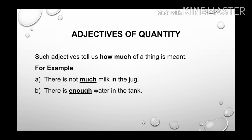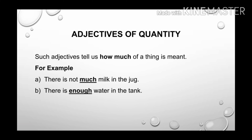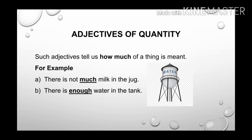Our next kind of adjective is adjectives of quantity. Such adjectives tell us how much of a thing is meant — what is the quantity of the thing. For example: There is not much milk in the jug. Here the word much is the adjective of quantity as it is telling about the quantity of the milk. In another example, there is enough water in the tank — enough is the adjective of quantity as it is telling about the quantity of water in the tank.